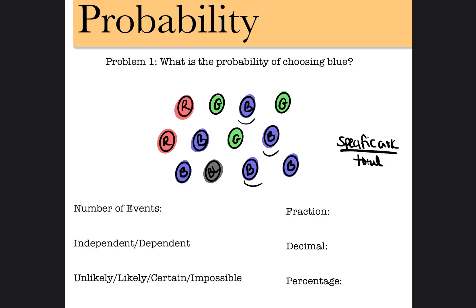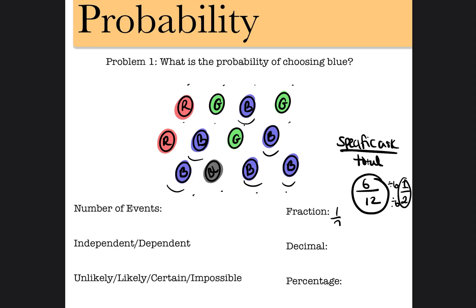Counting the blue ones: 1, 2, 3, 4, 5, 6 blue out of a total of 1, 2, 3, 4, 5, 6, 7, 8, 9, 10, 11, 12. So the fraction would be 6 out of 12. Sometimes they'll ask you to reduce that fraction — divide both by the greatest common factor — so it would be 1 over 2, which is the fraction form of the probability of choosing blue.